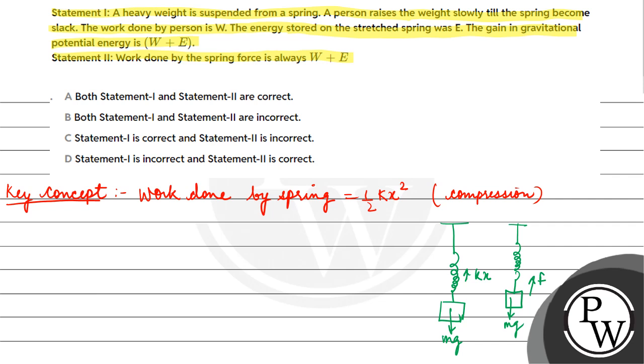The gain in potential energy would be equal to work done by man due to this force F plus work done by spring. That would be equal to work done by man is W and the energy stored on the stretched spring is E, which is our work done that will be stored in the form of potential energy.